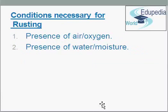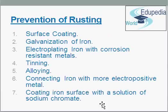Necessary conditions for rusting. Prevention of rusting — how can we prevent rust? By surface coating: rusting of iron is prevented by coating the surface of iron with oil, grease, paint, and varnish.